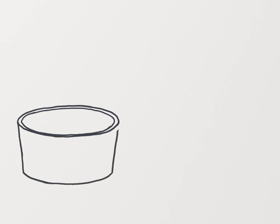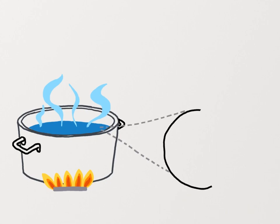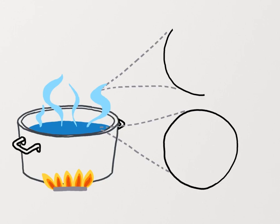Let's first think about what boiling is by looking at the example of water. Boiling is the transition from the liquid phase to the gas phase. In the gas phase, molecules are much more separated and spread out, as you can see here.